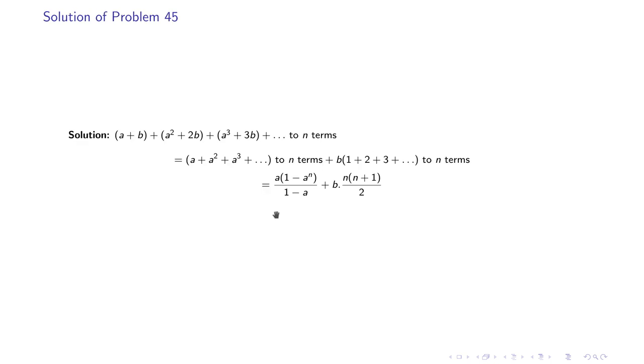So we rewrite the given series accordingly, and then we find the final value as a(1 - a^n)/(1 - a) + b·n(n + 1)/2. Recall that sum of the arithmetic progression 1 + 2 + 3 up to n terms is n(n + 1)/2.